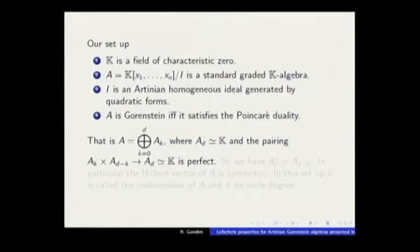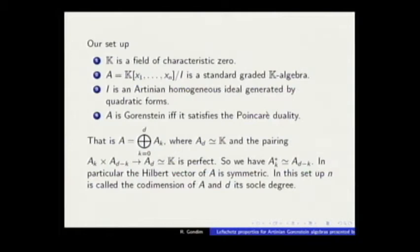Poincare duality in this sense: the last degree part of A is just K, and the pairing given by multiplication is perfect. So we have this duality. In particular, the Hilbert vector of A is a symmetric vector. In the setup, c is called the codimension of A, and d is the last grade, the socle degree.